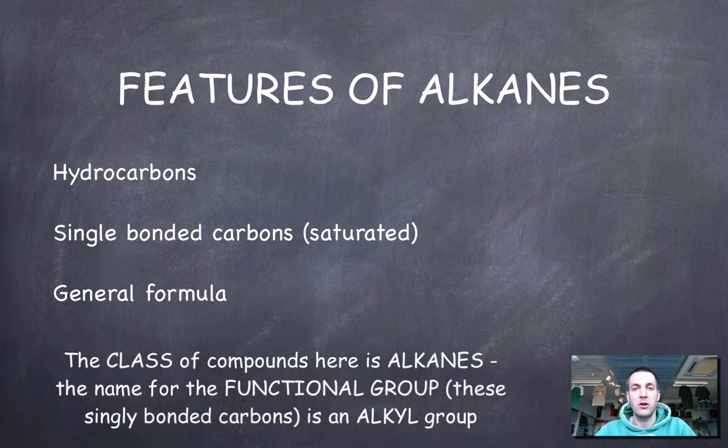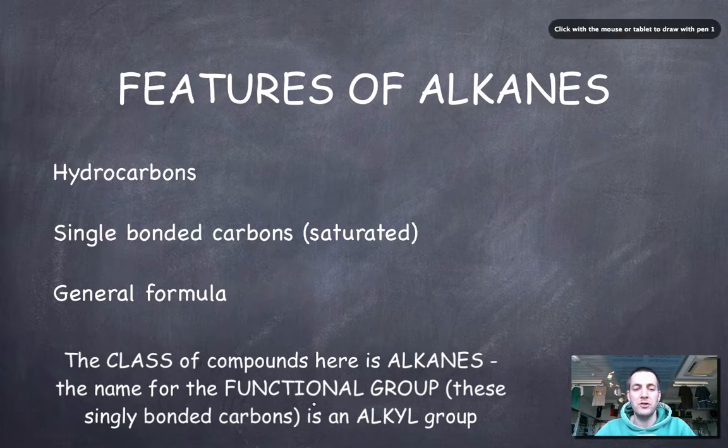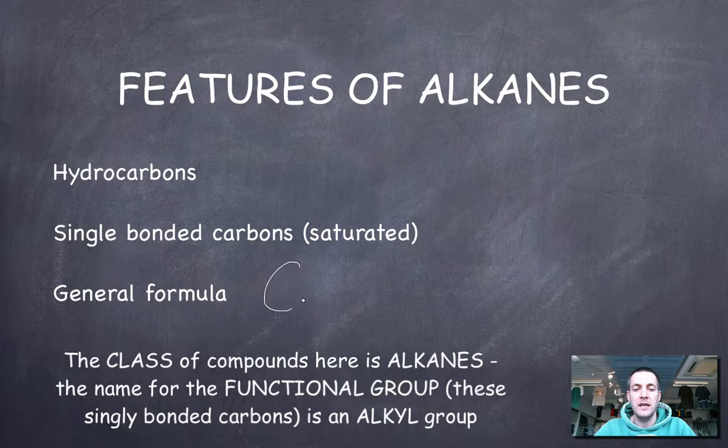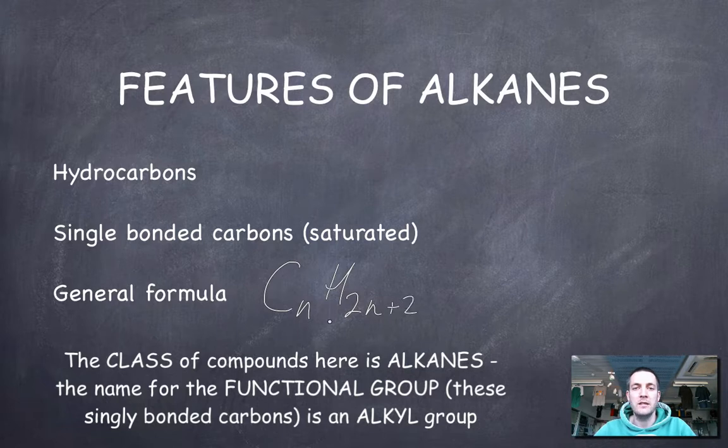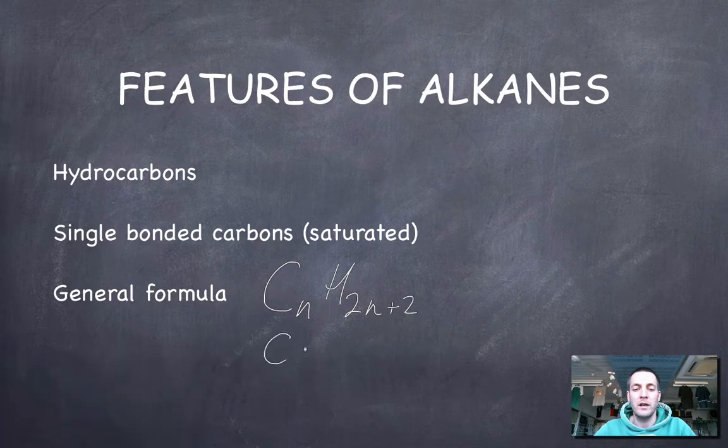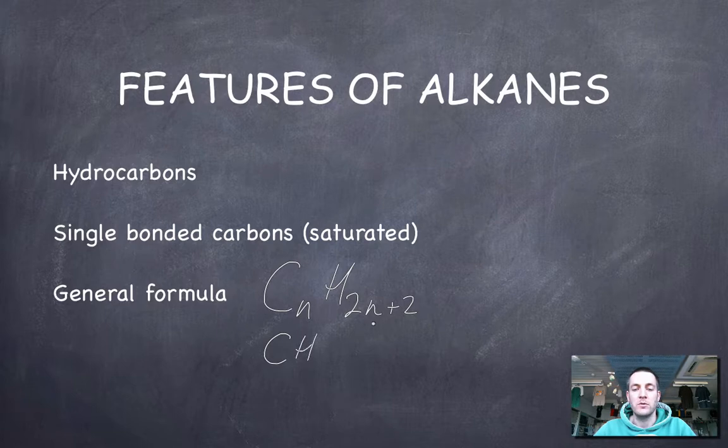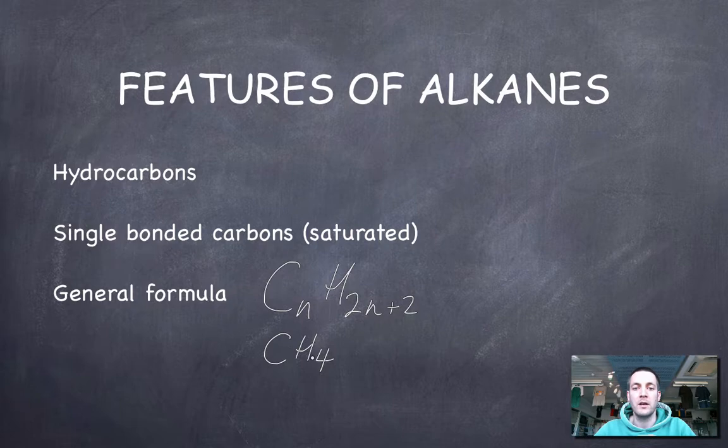And this means because there's no space, if you like, there's no spare bonds in the molecule where other things could add, alkanes are called saturated. We can't put any more atoms into them without taking some out. So because they're only singly bonded, they're called saturated, and they all have the general formula CnH2n plus 2. So n is any whole number. For example, if n was 1, H would be 2 times 1 plus 2, which is CH4. So this is the first alkane with one carbon atom.